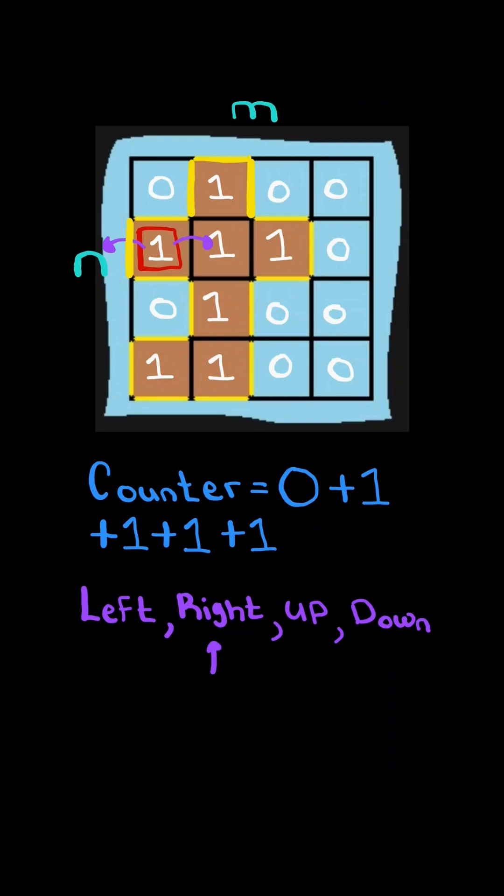If a direction's value is one, then there exists no perimeter. If a direction's value is zero, then there exists a perimeter, so we update our counter. Once we're done checking all the directions, we move on to the next square.